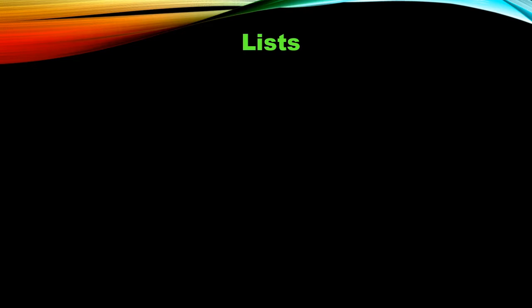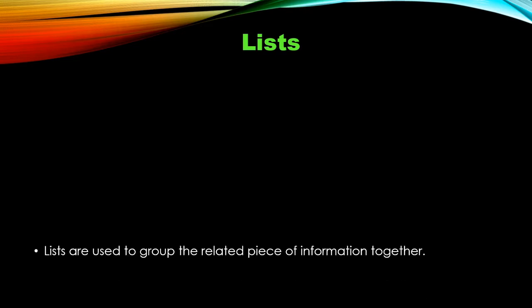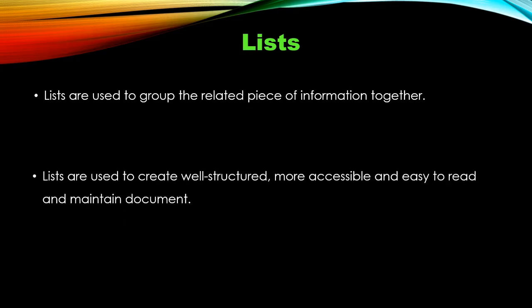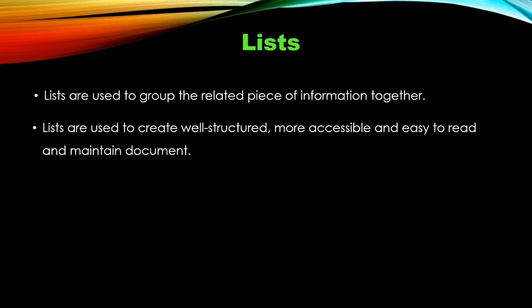Lists are used to group related information together. By using this grouped information we can present our document in a well structured and more accessible way. Documents created by using lists can easily be read and maintained. So lists are very important. HTML included lists in HTML 3.0 and later versions.